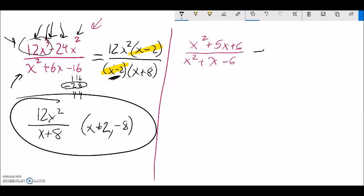So I'm doing this next one. Same sort of thinking. I'm going to factor top, factor bottom, see what cancels out. So I want things that multiply to 6 but add to 5. Things that multiply to 6 would be like 1 and 6, 2 and 3.